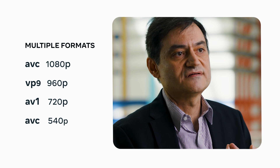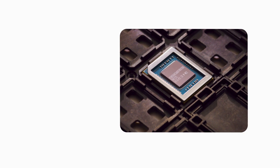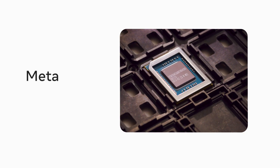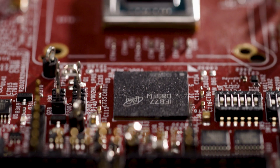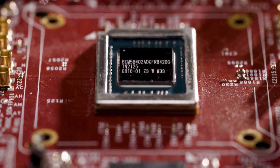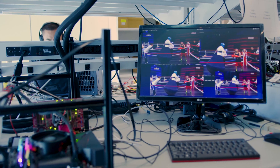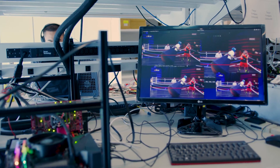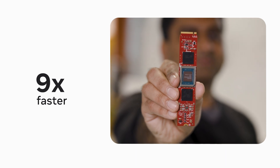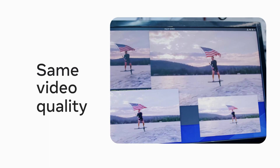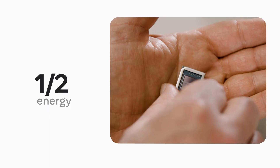And the only way to crunch this is by a product like MSVP. MSVP is Meta Scalable Video Processor, and it is the tool we use to do the transcoding of billions of videos for Facebook, Instagram, Messenger, and more. MSVP processes these videos nine times faster than traditional software encoders, at the same video quality at half the energy.